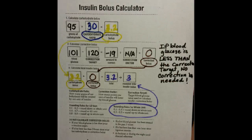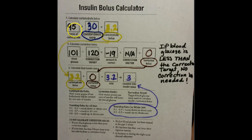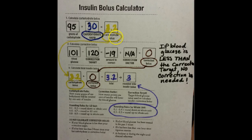Let's try another example. Again, we start by calculating the insulin needed to cover carbohydrates eaten. For this particular meal, the student will eat 95 grams of carbohydrate. We take 95 and divide it by the carbohydrate ratio from the insulin administration orders, which in this case is 30. So 95 divided by 30 equals 3.2 units — the carbohydrate bolus — which is then copied from step 1 down to the first box in step 3, also labeled carbohydrate bolus.